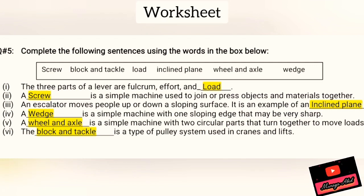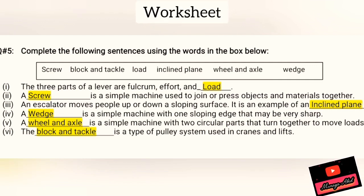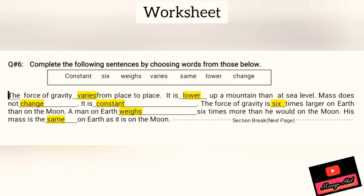Fourth: a wedge is a simple machine with one sloping edge that may be very sharp. Fifth: a wheel and axle is a simple machine with two circular parts that turn together to move loads. Sixth: the block and tackle is a type of pulley system used in cranes and lifts.